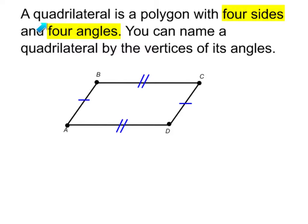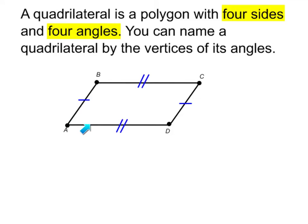A quadrilateral is a polygon with four sides and four angles. These are our sides and our angles. Right here you can see I have an obtuse, acute, obtuse, acute. So a quadrilateral is a polygon with four sides and four angles.